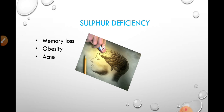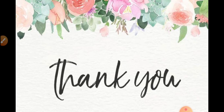Regarding sulfur deficiency: mineral deficiency generally occurs when the food we intake is not rich in that mineral, meaning the plants do not grow in soil rich in that mineral. Sulfur deficiency leads to memory loss, because sulfur helps in the growth of hippocampal cells. It also causes obesity and acne. So the sulfur deficiency conditions are memory loss, obesity, and acne. In conclusion, we discussed two major minerals — chloride and sulfur — both of which have major functions in the body including respiratory, digestive, and many other functions. Thank you.